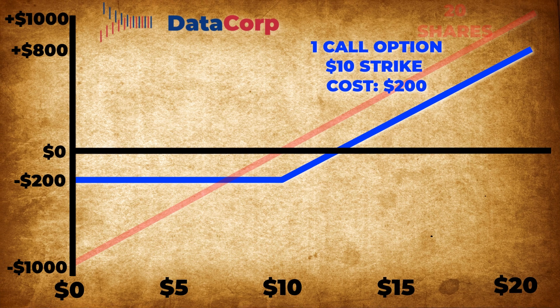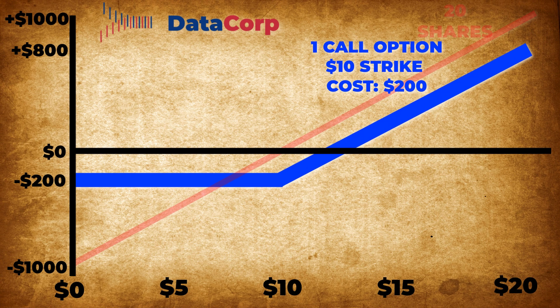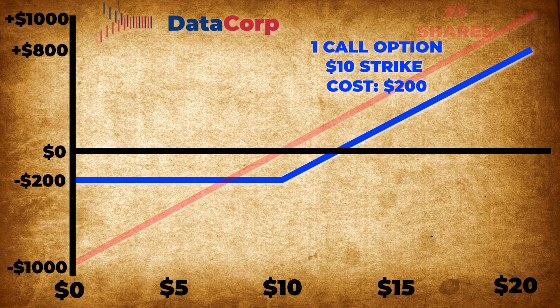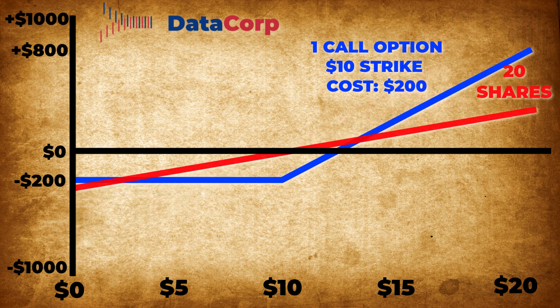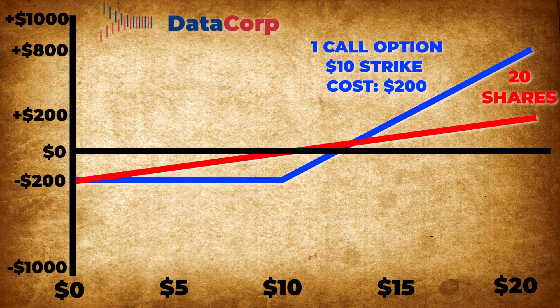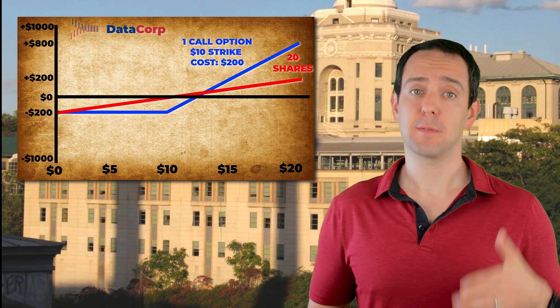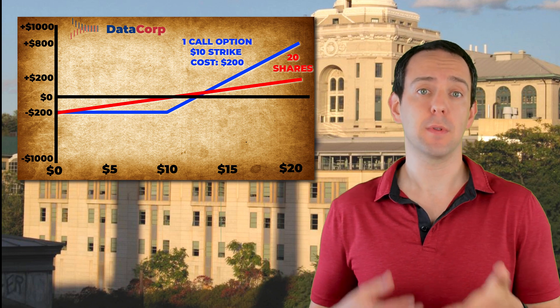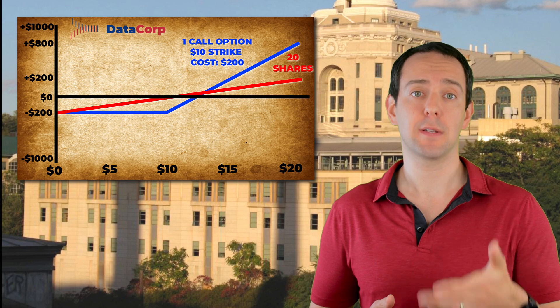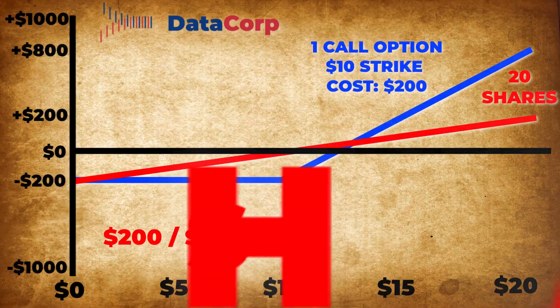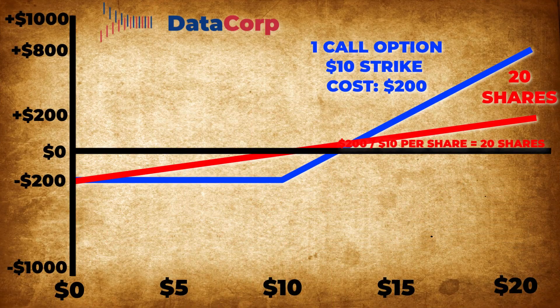So let's do that for an investment of $200. The nice thing when we do this is that the line for the options doesn't change at all, but what changes dramatically is the line for buying stocks themselves. The way I get this is by figuring out how many shares I could buy with the same $200 it would cost to buy a single call option. Well, at $10 per share, I can buy 20 shares. So now the two lines are definitely not parallel anymore, and that really changes how we compare stocks to options.